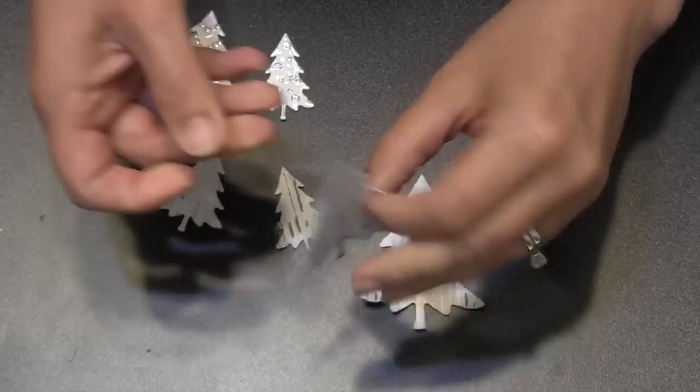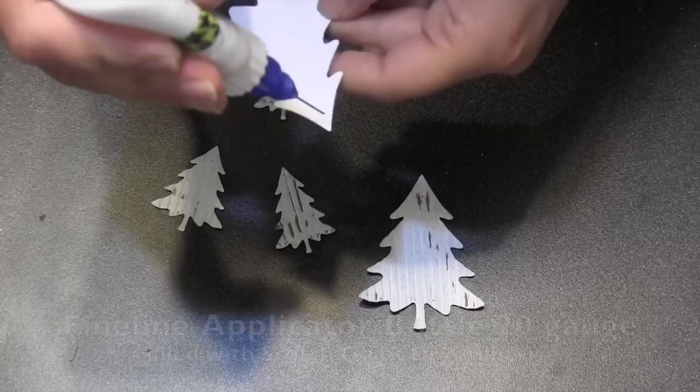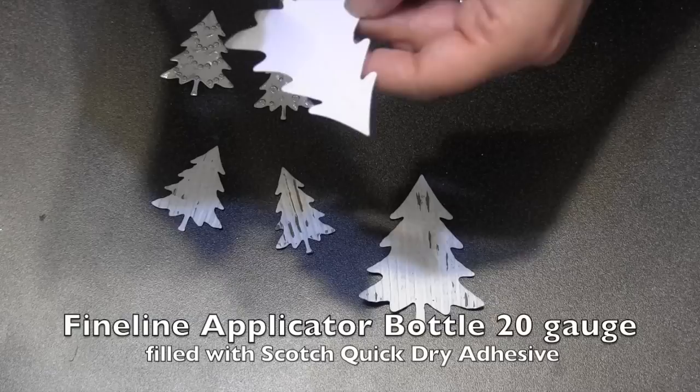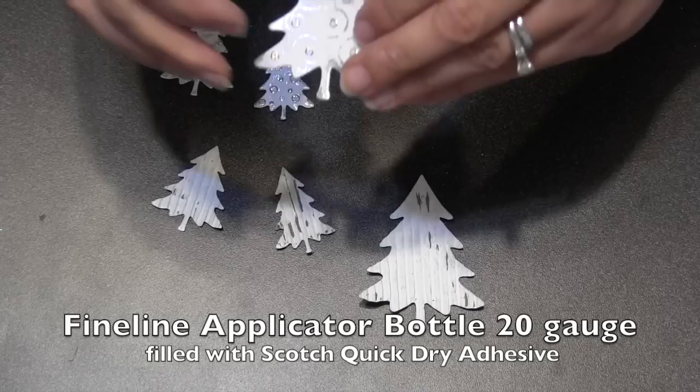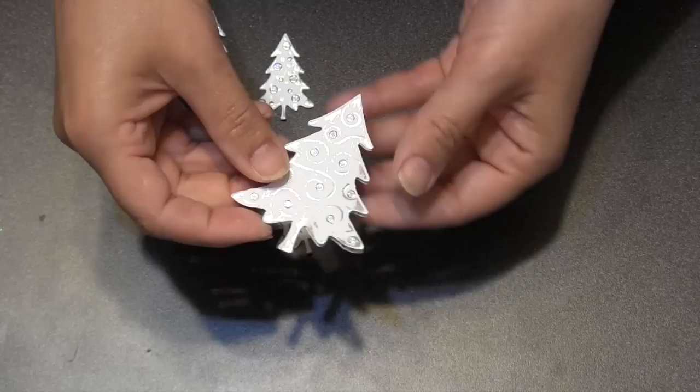Now I still have those corrugated trees that are going to give my trees some extra dimension. So what I like to do is just kind of bend up the sides of the top tree because I'm only going to use my glue right up the middle of that tree to attach it to the corrugated one. And I'm going to go back to my favorite glue dispenser, which is the fine line 20 gauge applicator bottle filled with my Scotch quick-dry adhesive, and just add some adhesive right up the middle of that tree to attach it to the corrugated one.